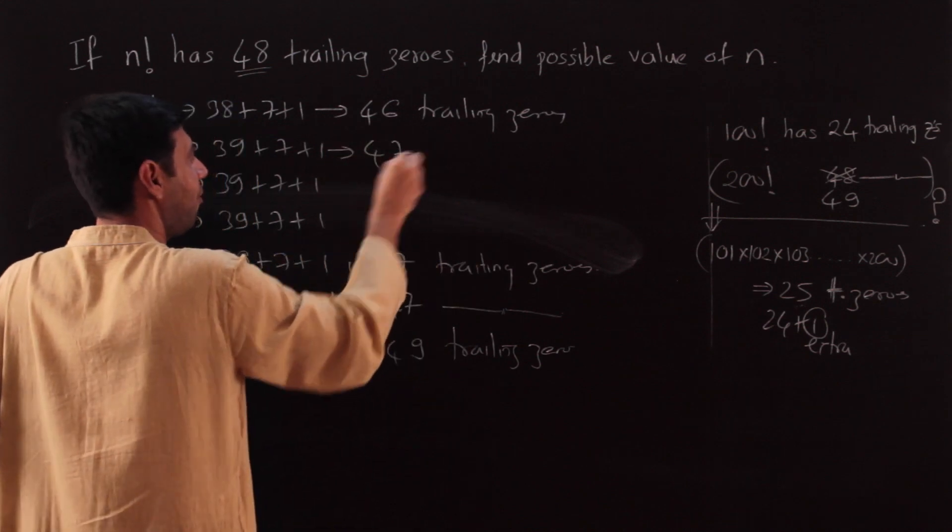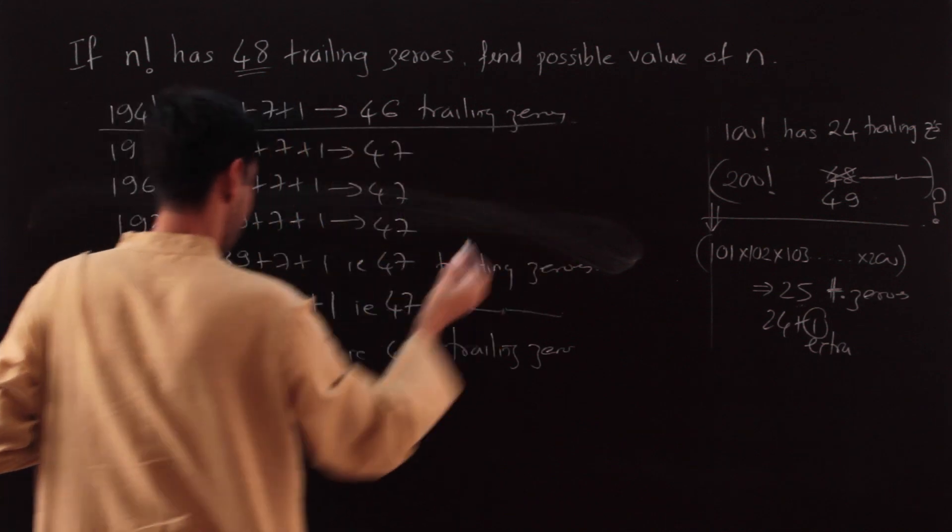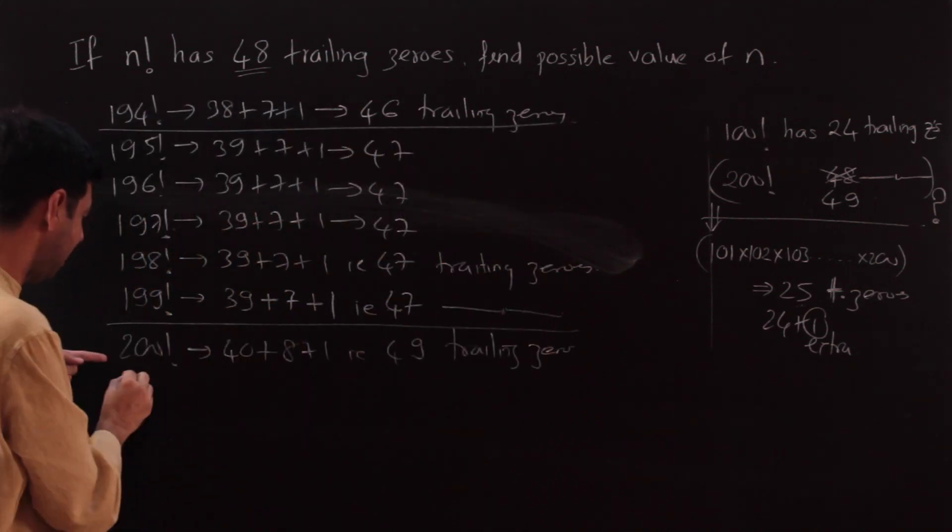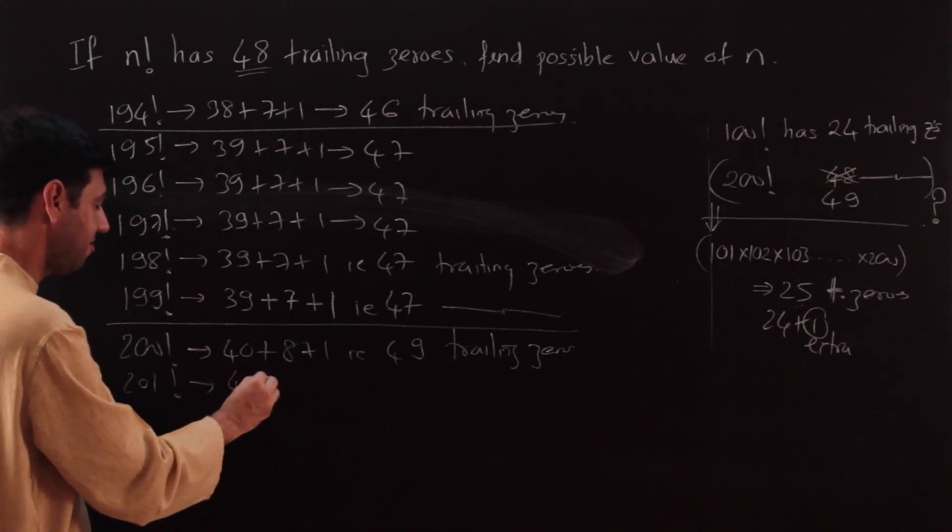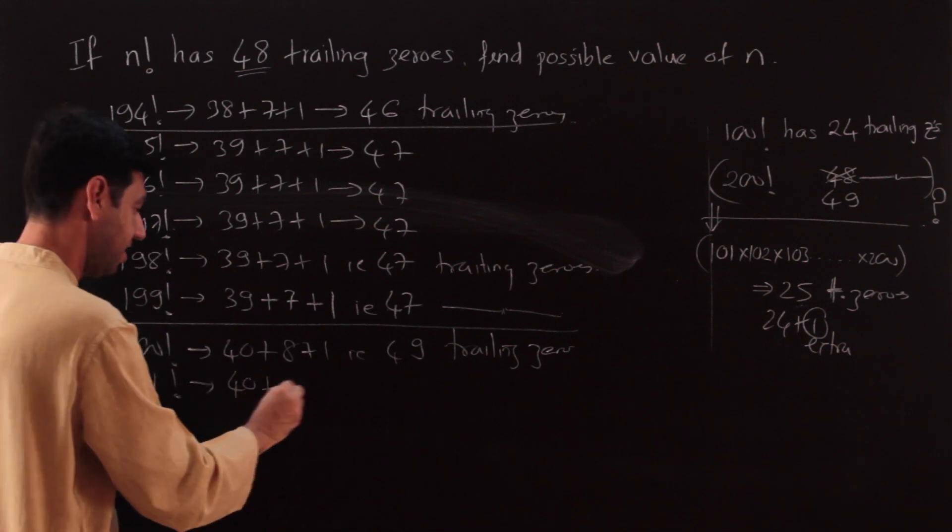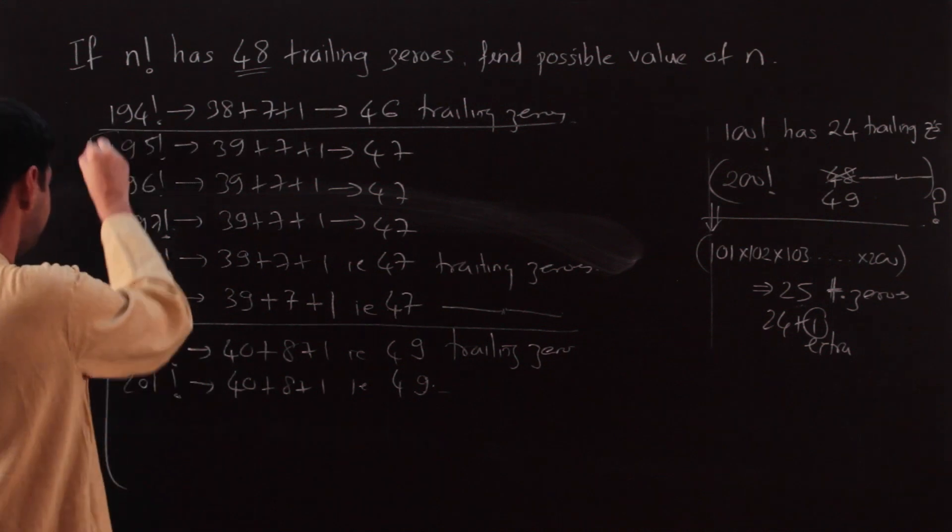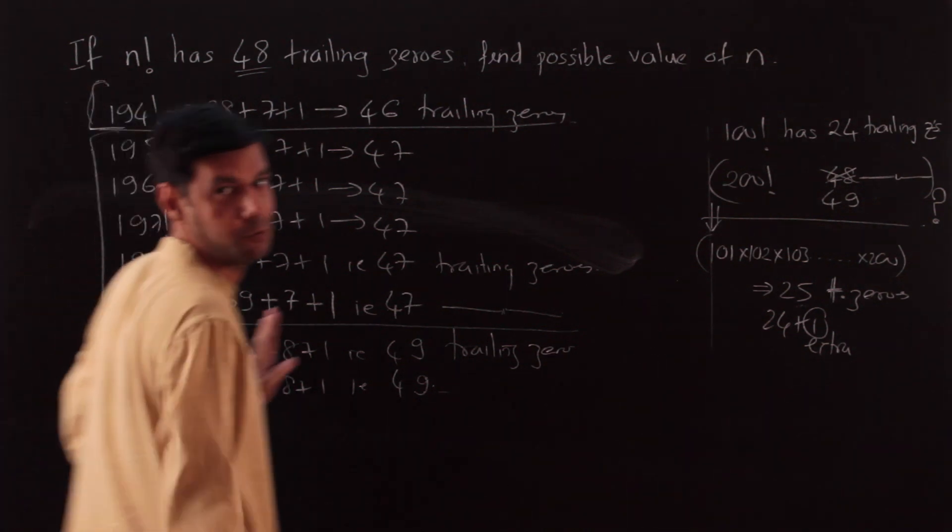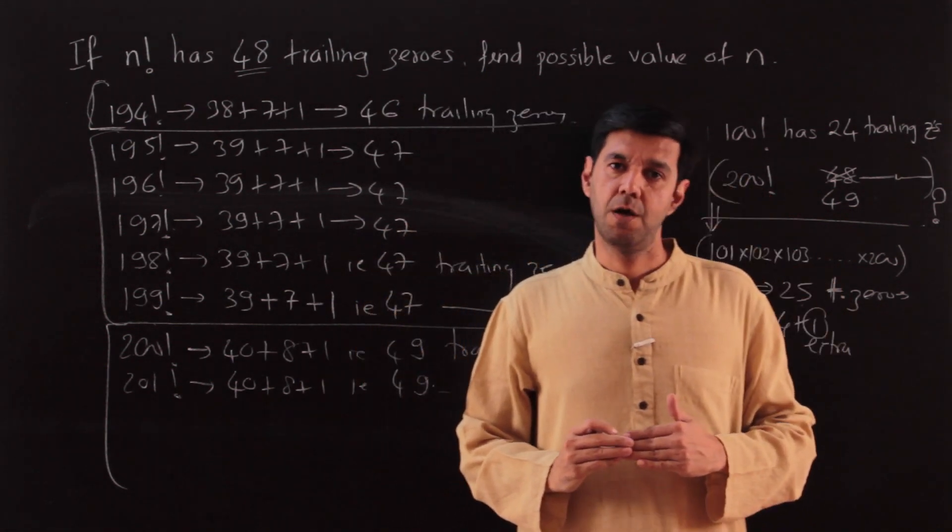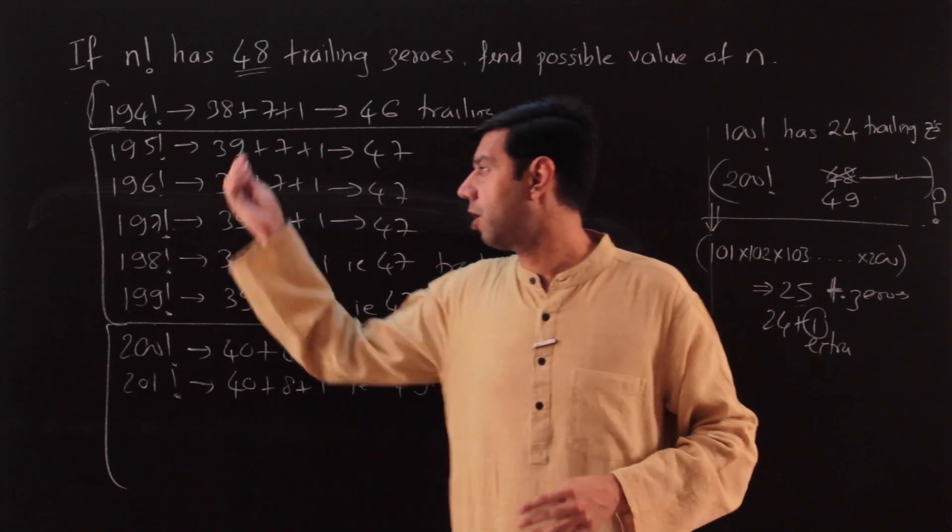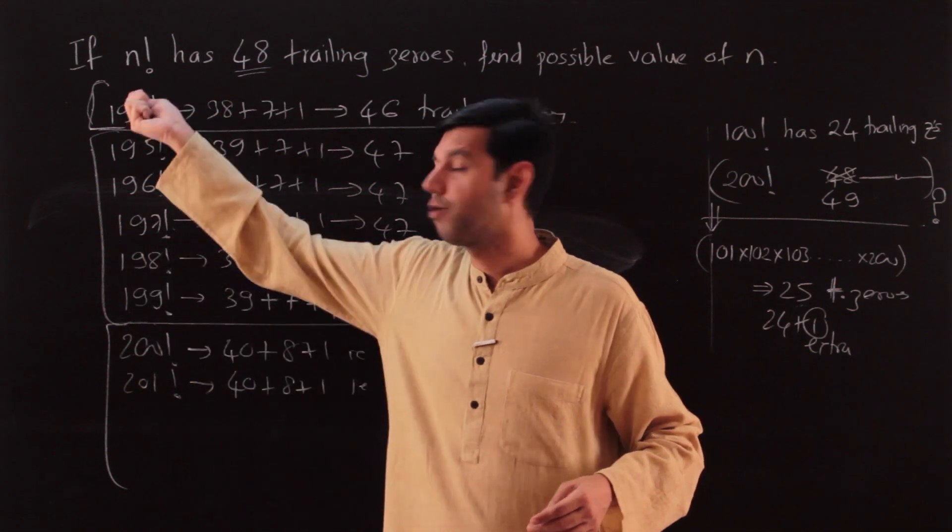The rest will have 47, 47, 47, 47, and 49. And if I just start working further, 201 when divided by 5 will give me 40, and so I again start getting the same thing. So what am I talking about here? This process that we are doing now should be logical, should be very, very, very logical. You don't have to keep writing them. So think about what we are doing.